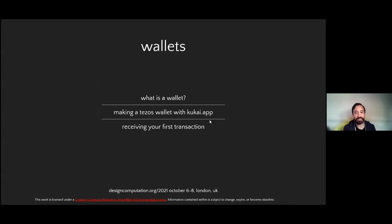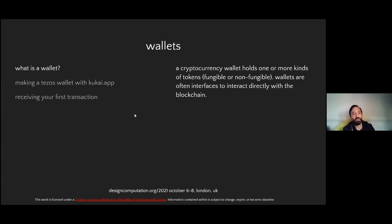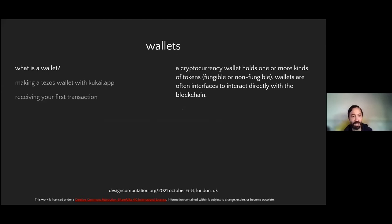So let's talk about wallets and actually get our hands dirty with some of this. What is a wallet? We're going to go through making a Tezos wallet and receiving your first transaction. A cryptocurrency wallet holds one or more kinds of tokens — fungible or non-fungible. Wallets are often interfaces to interact directly with the blockchain, or in this case, interact with the smart contracts on that blockchain. Let's go through and make a wallet.